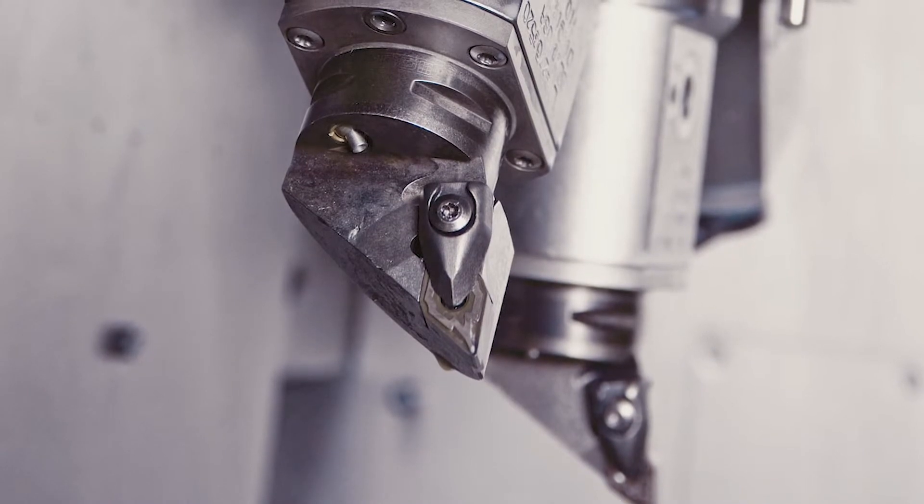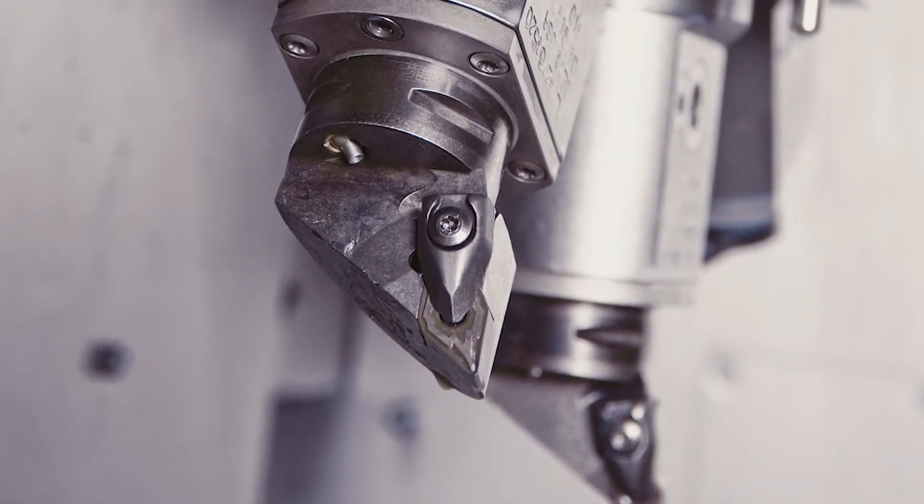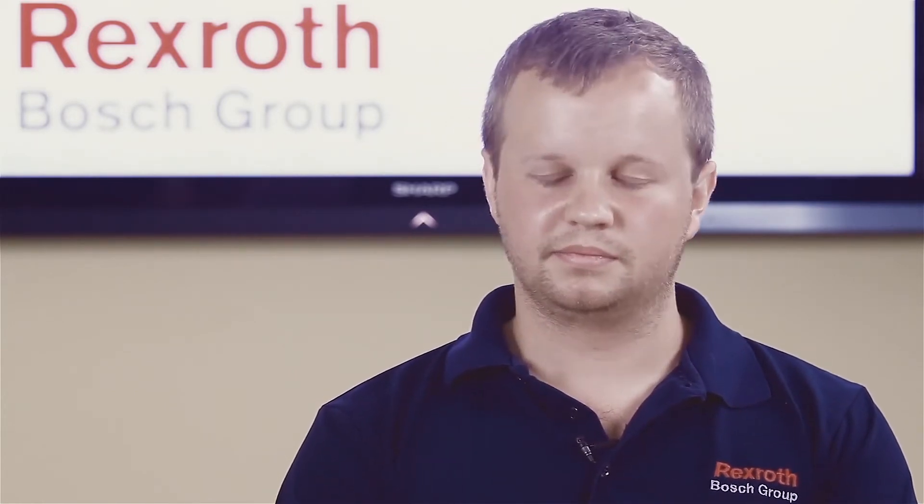One of the good things about Seco was their willingness to work with us to help design custom tool holders. They helped us develop a double clamping unit that was a VDI 30 to a C4, which allowed us to utilize the y-axis on our machines and turn one tool pocket into two tools, so you can have two tools in a single pocket.